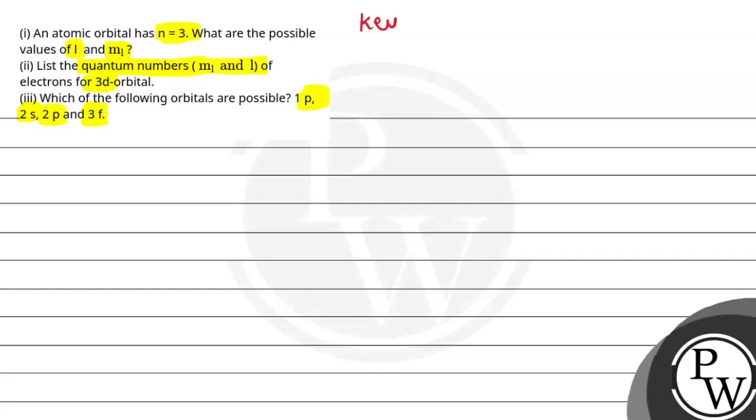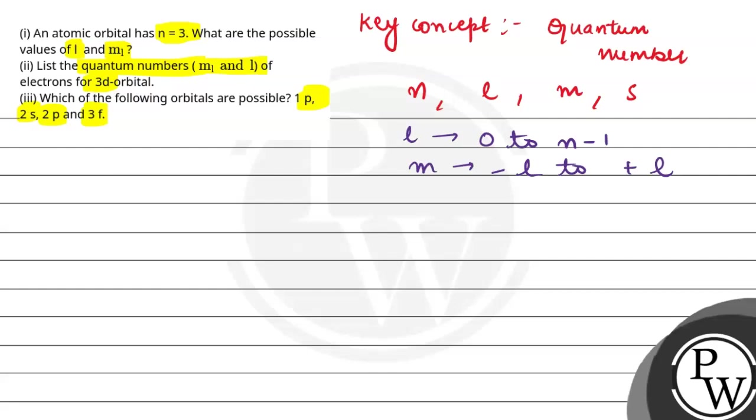So first of all, the key concept requirement is quantum numbers. We have 4 quantum numbers: n is the principal quantum number, l is azimuthal quantum number, magnetic quantum number and spin quantum number. We have the value of l, it is from 0 to n minus 1, and the value of m is from minus l to plus l.